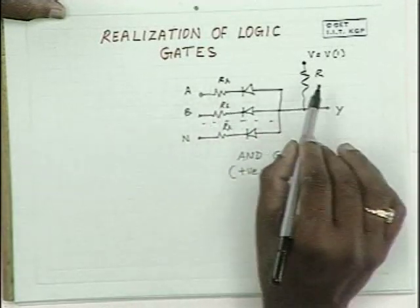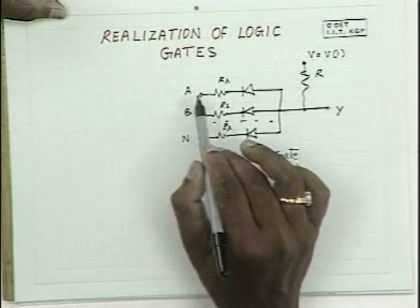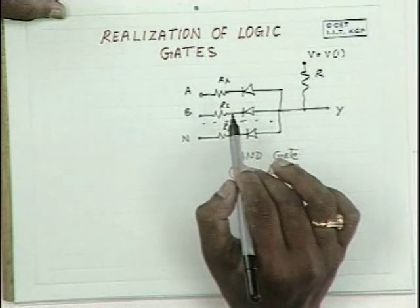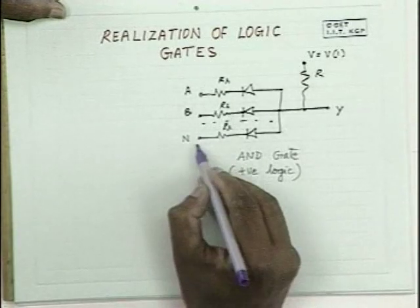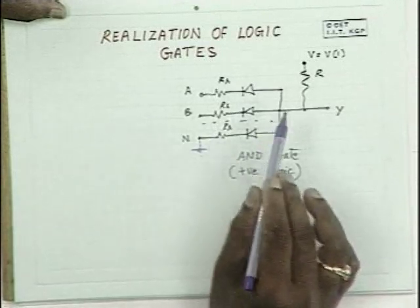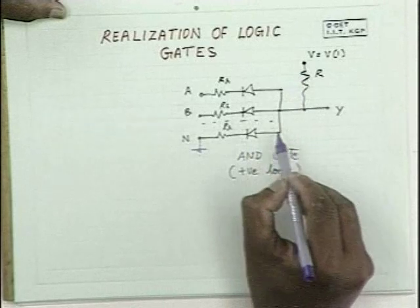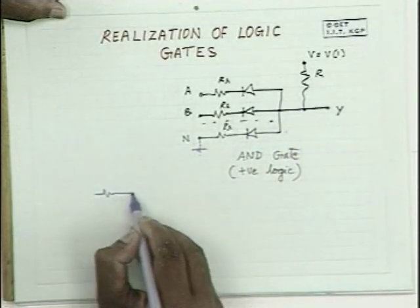Here RS is much smaller than R and is negligibly small. RS is introduced as a model because on the input side you have logic levels connected from some sources, and the resistance of those sources is included as RS. Now, if any one of these inputs happens to be at logic 0 — that means the voltage is very small, of the order of 0.2 volts — then this particular diode, connected to V on one side and almost ground potential on the other side, is forward biased.